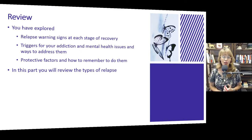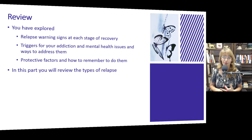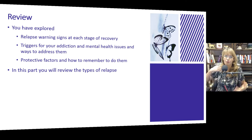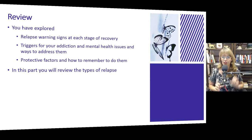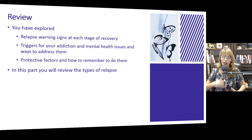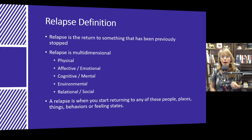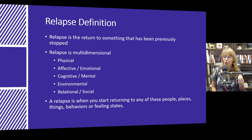You've explored relapse warning signs at each stage of recovery, triggers for your addiction and mental health issues and ways to address them, and protective factors like protective physical things that you can do, like getting enough sleep, and how you can remember to do those in all of the prior units. In this part, you're going to review the types of relapse, so we're kind of wrapping it all up and putting a bow on it. Remember that relapse is the return to something that has been previously stopped, whether that's depression or anxiety or anger or addiction.